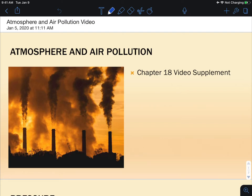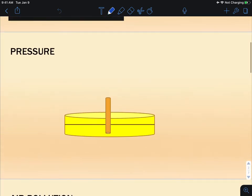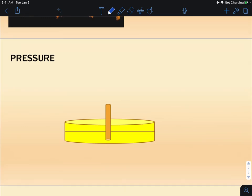Okay, so this is your Atmosphere and Air Pollution, your Chapter 18 PDF video supplement. And one thing I want to talk about here first is pressure, and that is air pressure, where it comes from. Your chapter doesn't really address this very much.